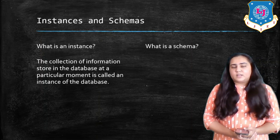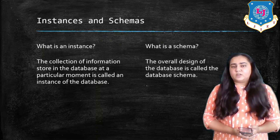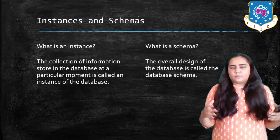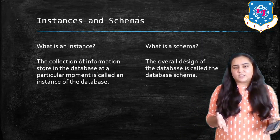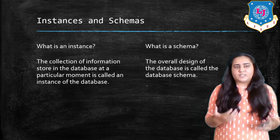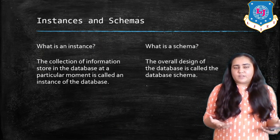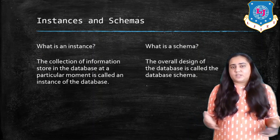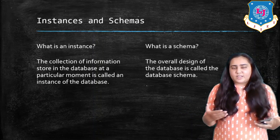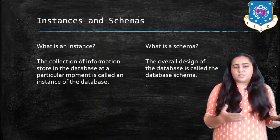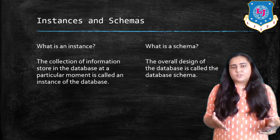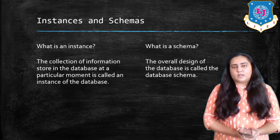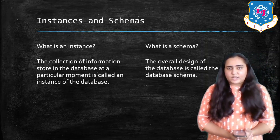A schema is the overall design of the database — whatever tables are present, whatever columns are present, their data types, and storage limits. For example, if there is a column called 'address', how many characters of data can be stored in it? All this information — what tables are there, what columns are there, what are their data types — together forms the schema of the database. I hope you understood this introduction to DBMS, and I'll see you in the next video. Thank you for watching.